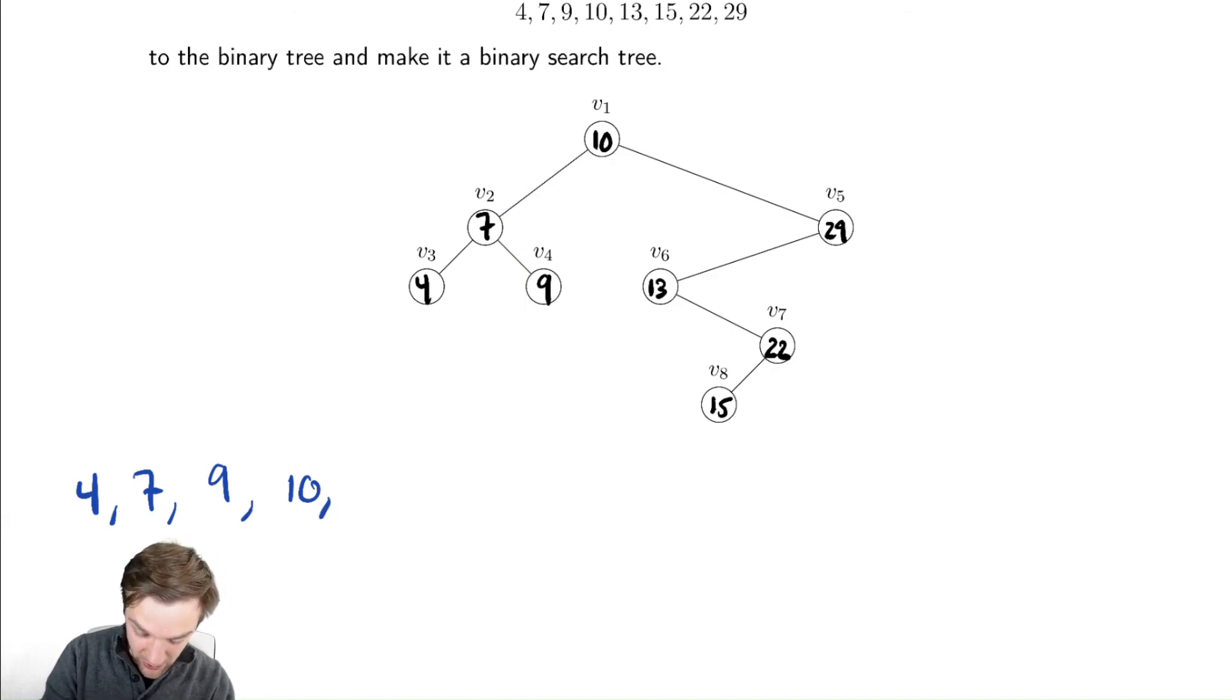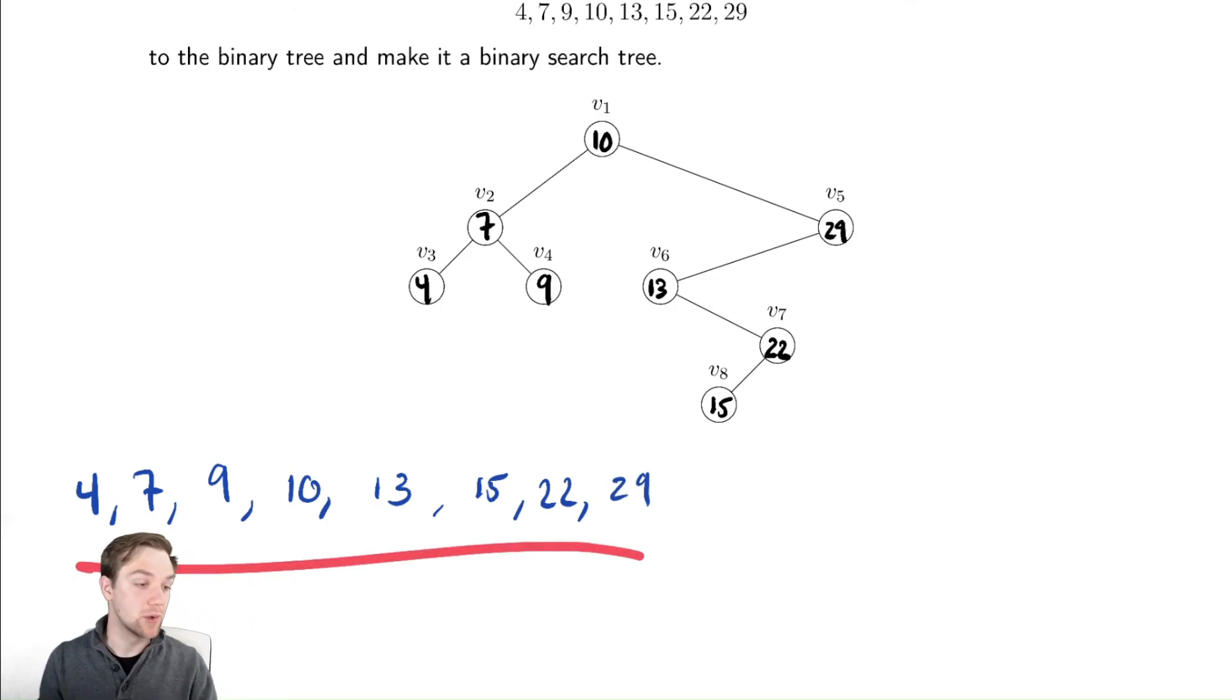Now we go to the right. From here we go to the left and then we print ourselves because there is nothing to the left to go to. Then we go to the right. Going to the right we then go to the left immediately if we can. So we go to 15. We then go to ourselves. There's nothing to the right so we go back up. We already went to the right from 13 so we go back up again then we go to 29. And if we look we printed these vertices in sorted order. Convenient.